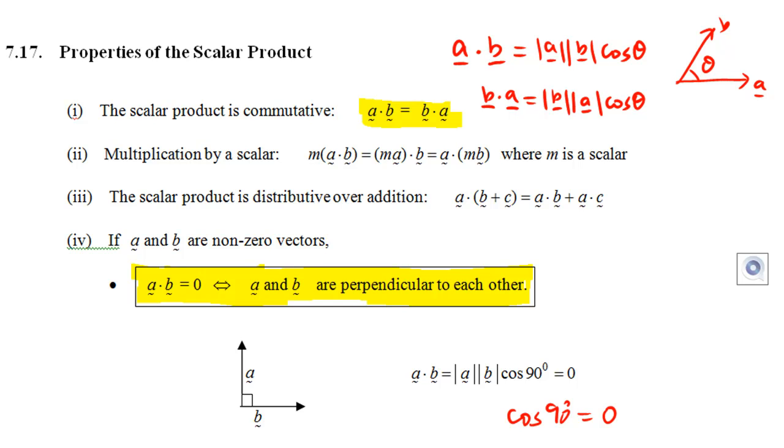Next, multiplication by a scalar. If m is a scalar, that means a number, then m times a dot b is the same as ma dot b, which is the same as a dot mb.